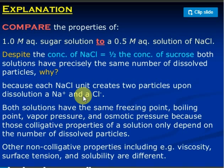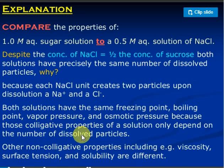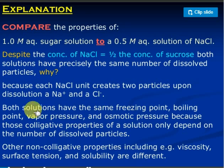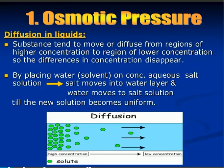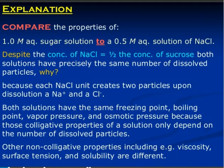Colligative properties do not depend upon the nature of particles — whether non-polar or polar molecules. They depend only upon the number of particles. Properties like viscosity, surface tension, and solubility are different — they are not colligative properties. The colligative properties are: depression of freezing point, elevation of boiling point, lowering of vapor pressure, and osmotic pressure.